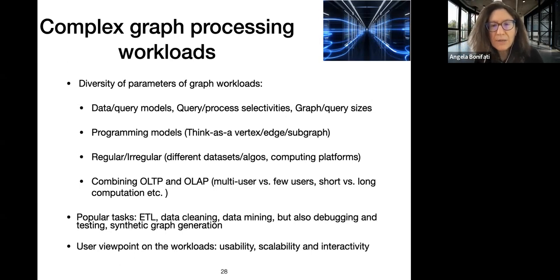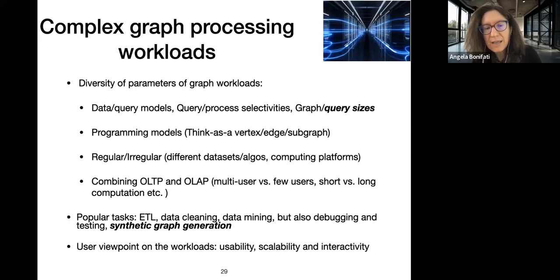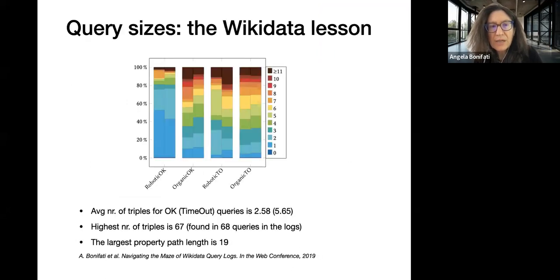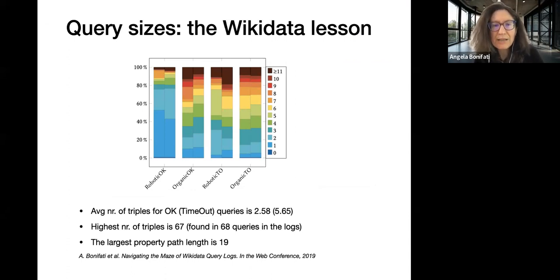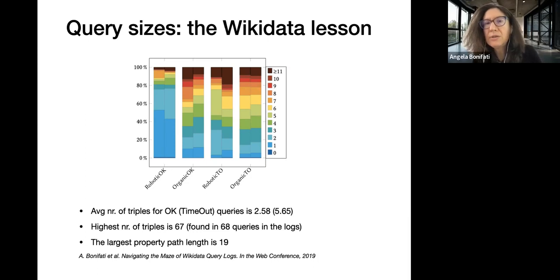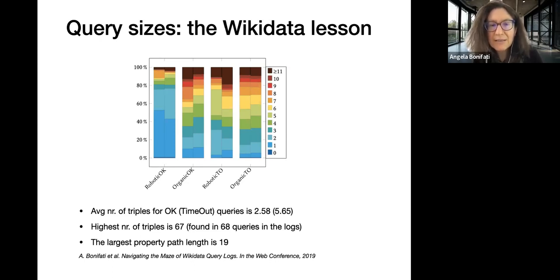Today I'll focus on two main topics we've worked on: query sizes and synthetic graph generation, to give an idea of their importance as workload parameters. For query sizes, we analyzed and dug into around 200 million queries from Wikidata — the database behind DBpedia — which has a SPARQL endpoint where users and applications formulate queries. We analyzed the sizes of these queries.